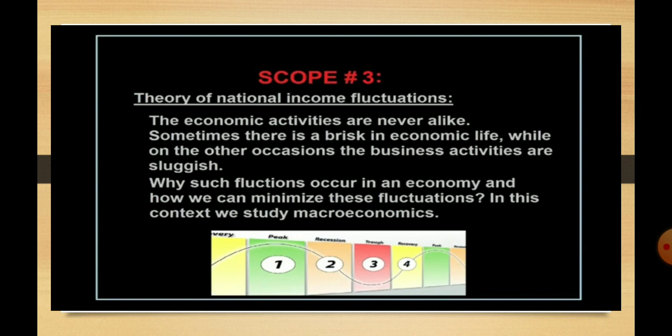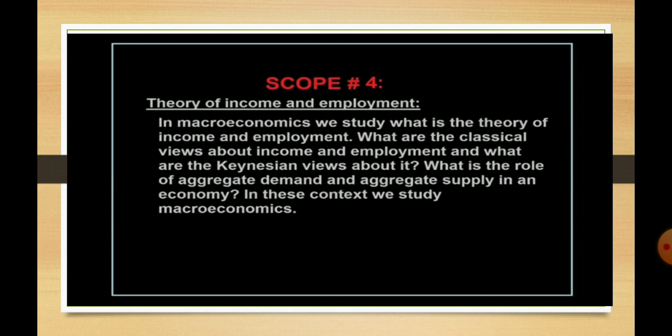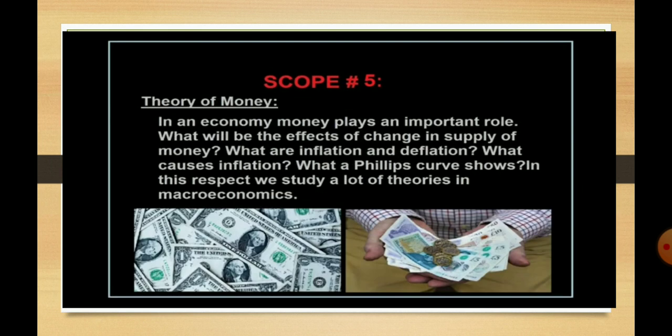Next is the theory of income and employment, where we learn about the Keynesian approach related to aggregate demand and aggregate supply, and also the saving and investment approach. After that, the theory of money — here we learn about the barter system, its drawbacks, how we overcome those drawbacks with the help of money, how commercial banks do money creation, and the quantitative and qualitative instruments followed by the RBI.